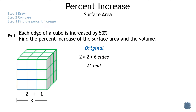Now we need to find the surface area of our new cube. We multiply the length and width of one face — 3 times 3 — and multiply by 6 sides. 3 × 3 × 6 = 54, so the surface area of our new cube is 54 cm².